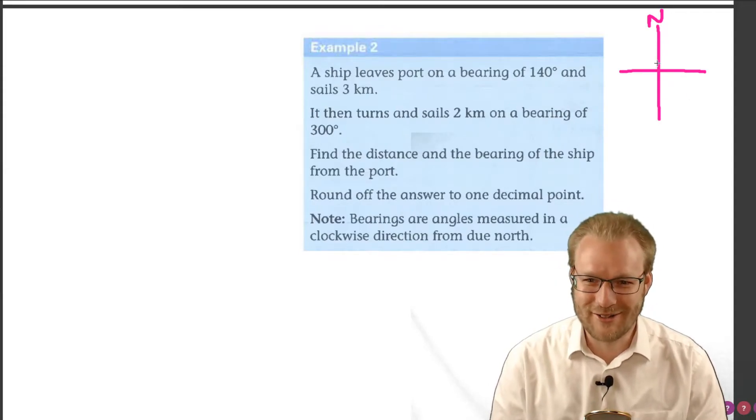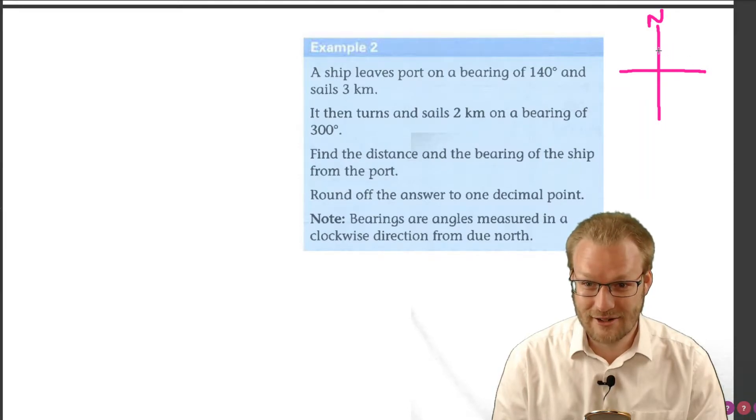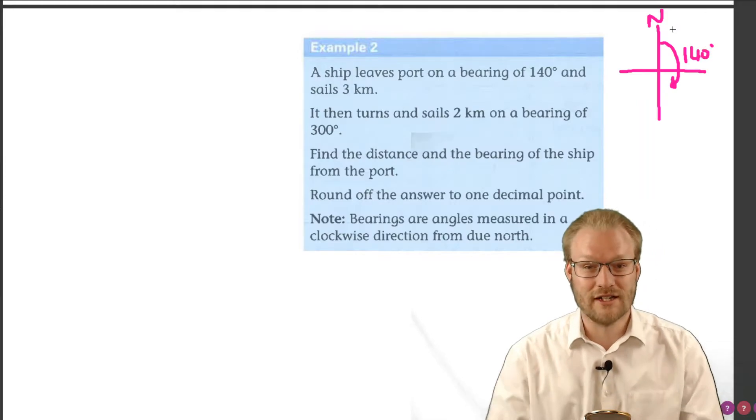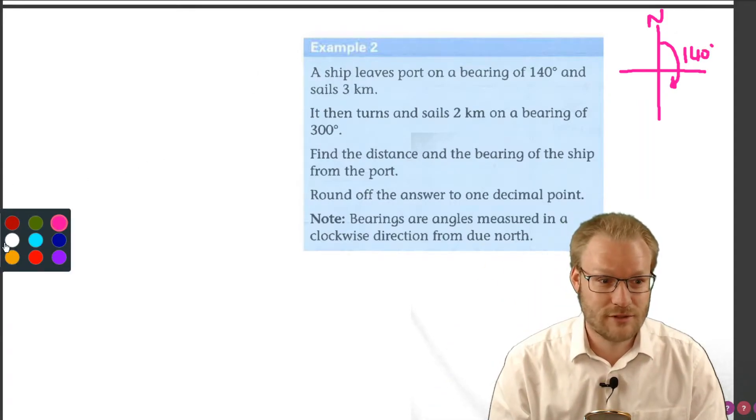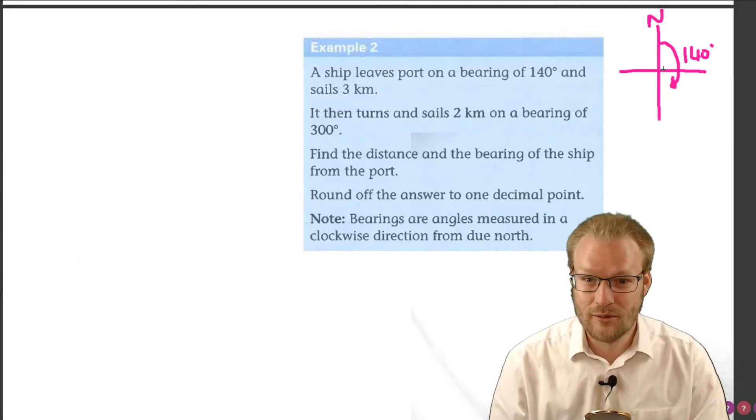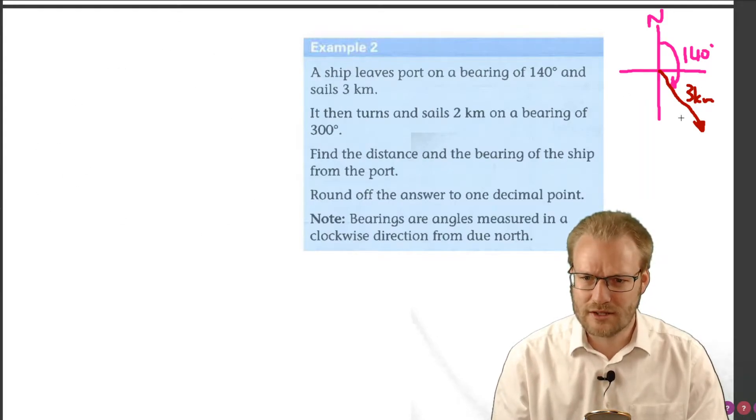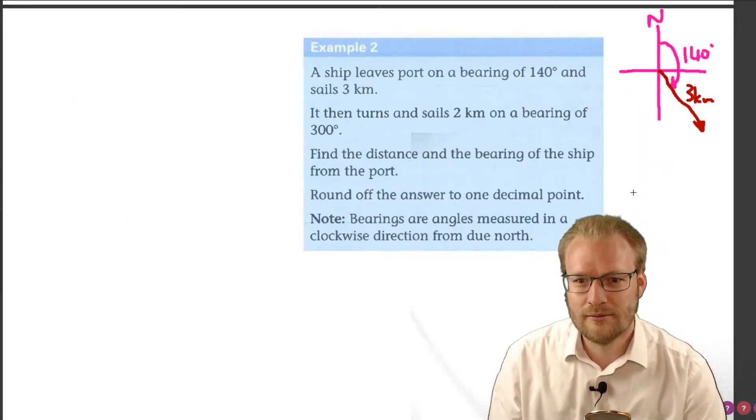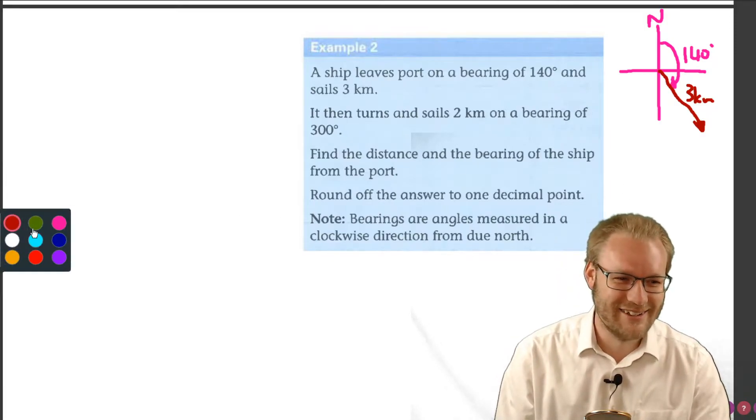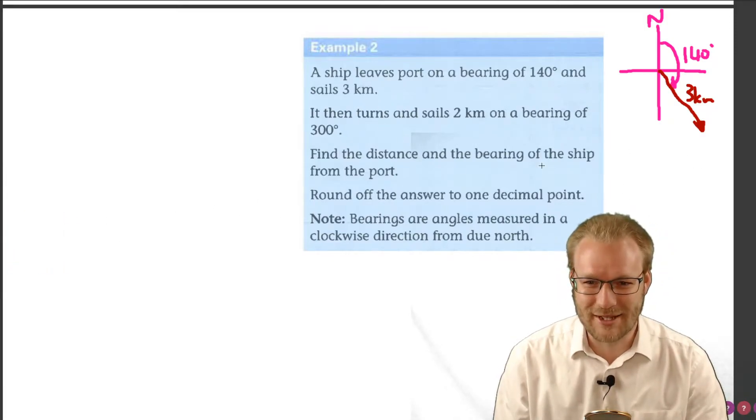We've got our 140, so this would be 90 degrees, so we're not going to get around to 180, so it must be around there somewhere. That would be 140 degrees going clockwise. Our first bit, it's going along that bearing for 3 kilometers. We're going to draw our diagram up here, but this is just to get our bearings.